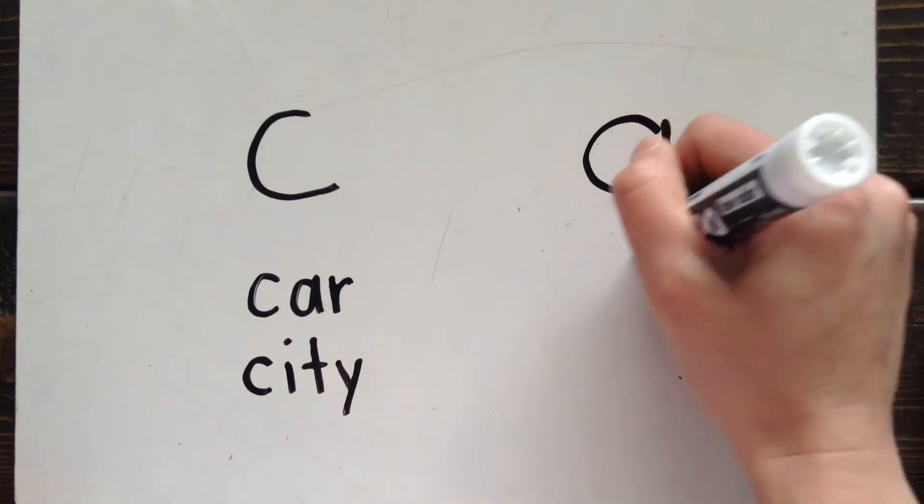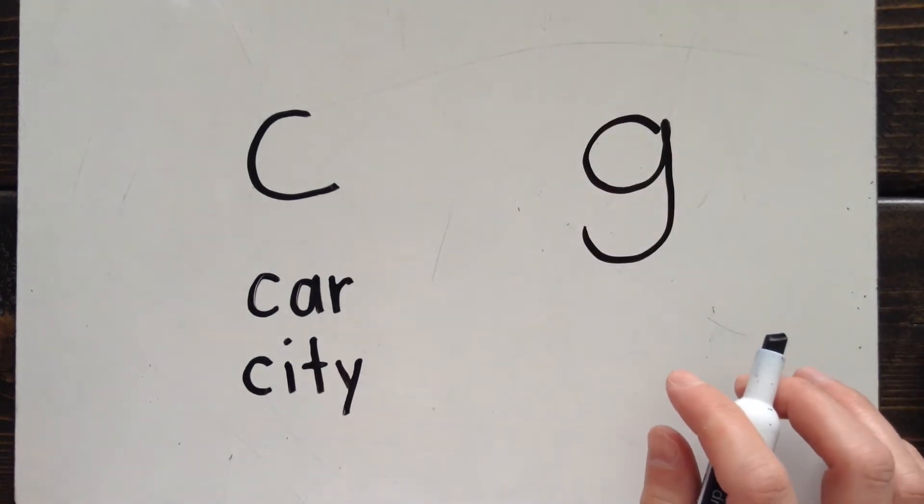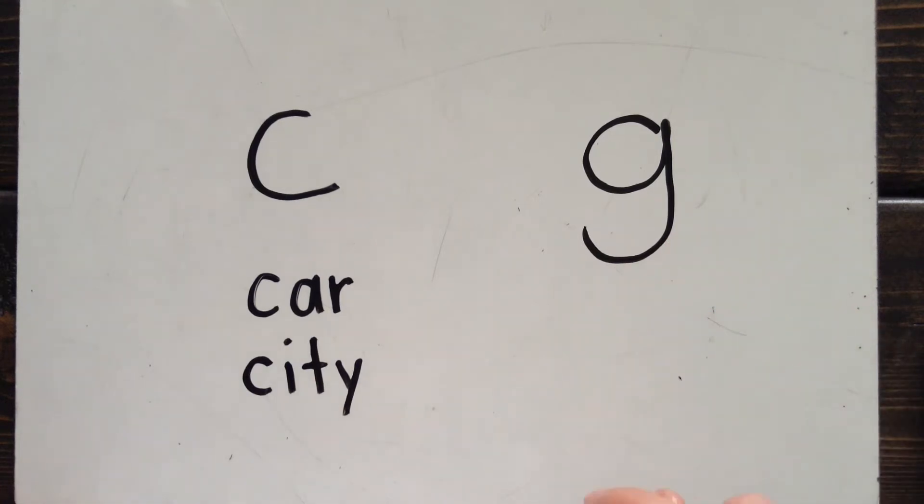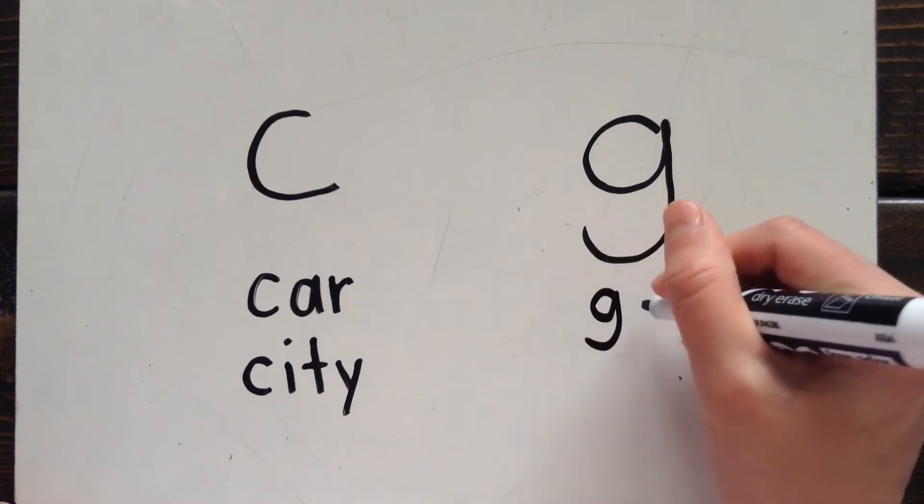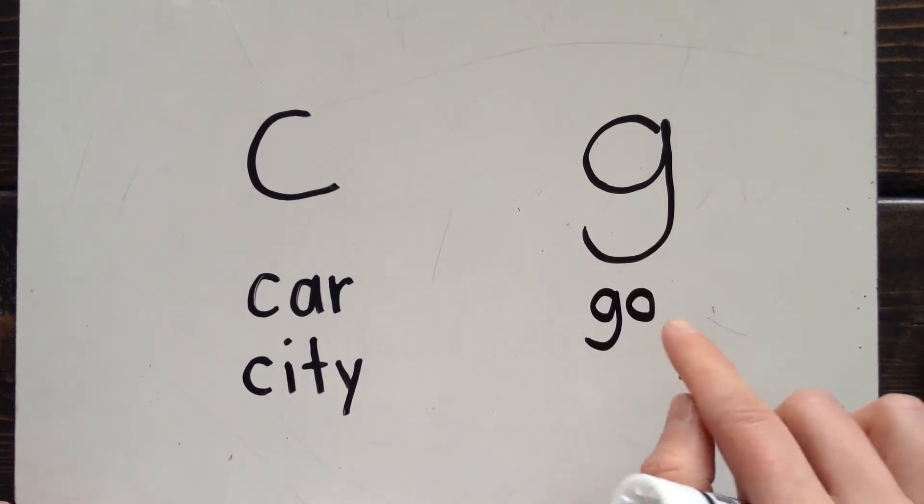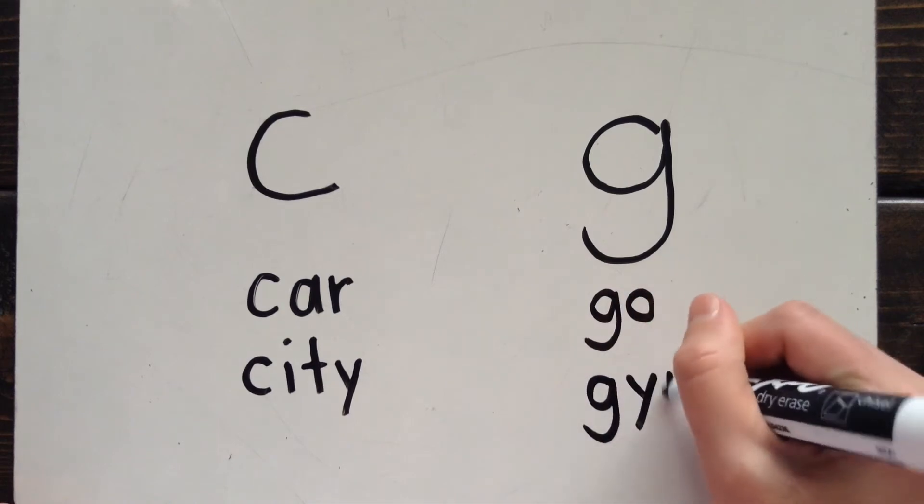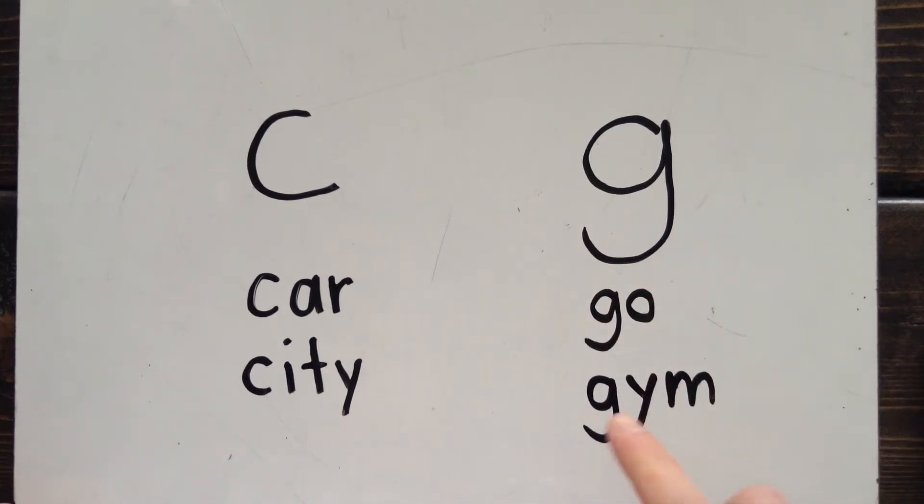Similarly, the letter G also has a hard and soft sound. The hard sound is g, and the soft sound is j. Here's an example: go, jim. Go and jim both start with the letter G, but in each case the G has a different sound.